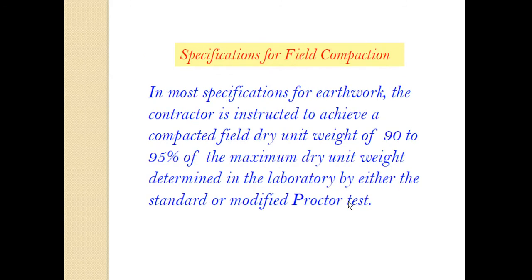In most specifications for earthwork, the contractor is instructed to achieve a compacted field dry unit weight of 90 to 95 percent of the maximum dry unit weight determined in the laboratory by either the standard or modified Proctor test. In the field we are obtaining a particular dry unit weight for any type of soil using standard or modified Proctor test, but in the field we cannot attain 100 percent of the unit weight obtained in the laboratory. So in the field, the maximum we can attain is 90 to 95 percent of the maximum dry unit weight obtained in the laboratory.